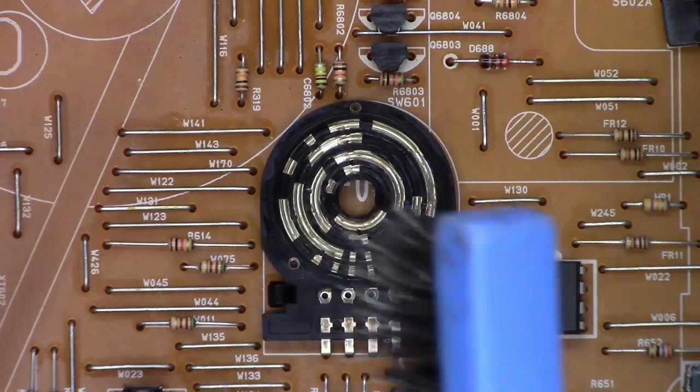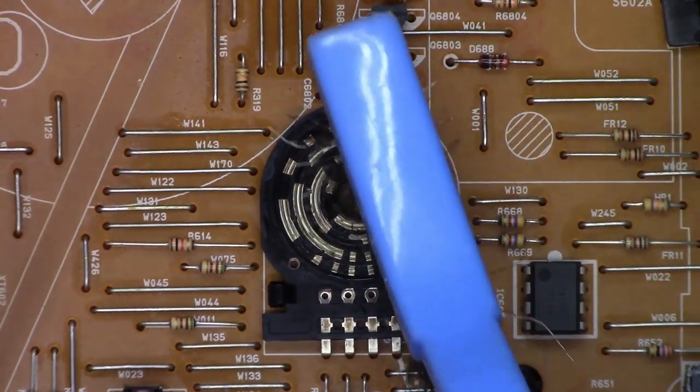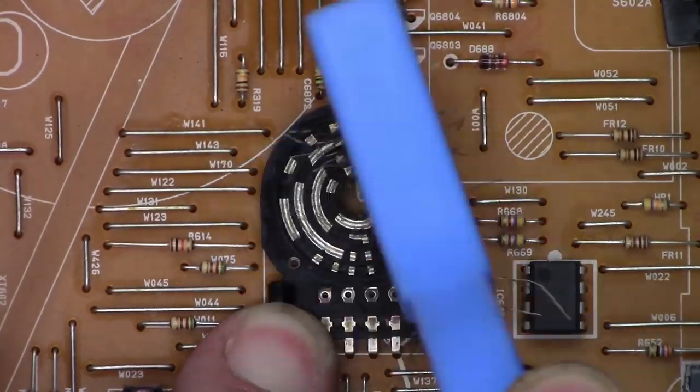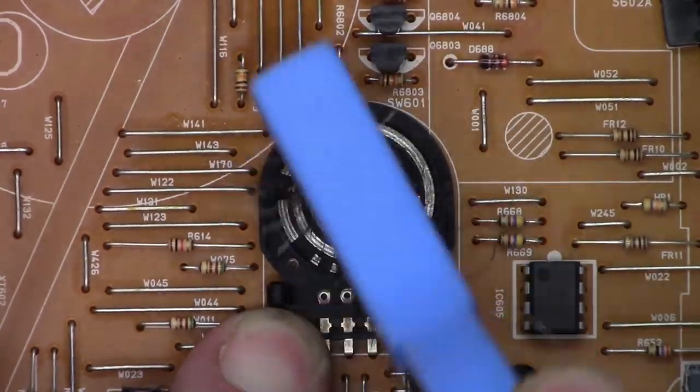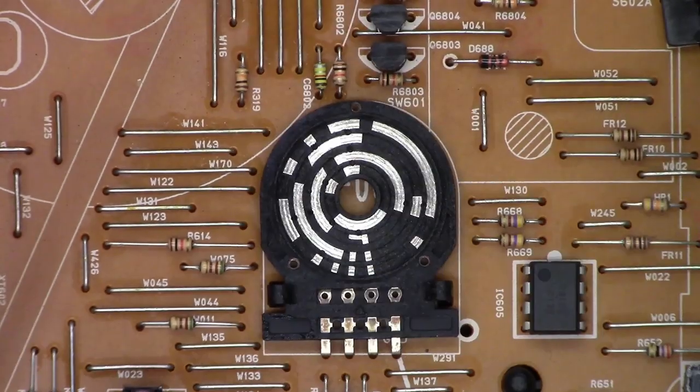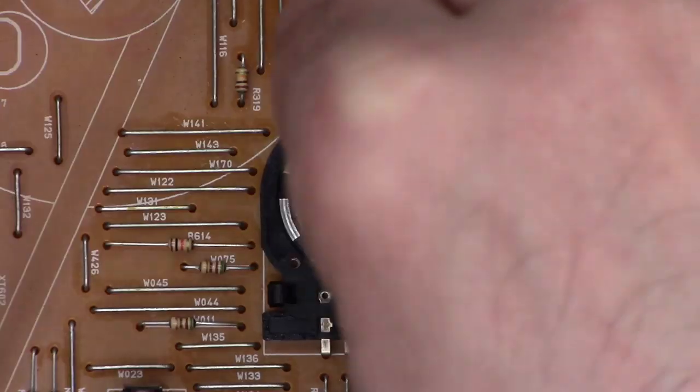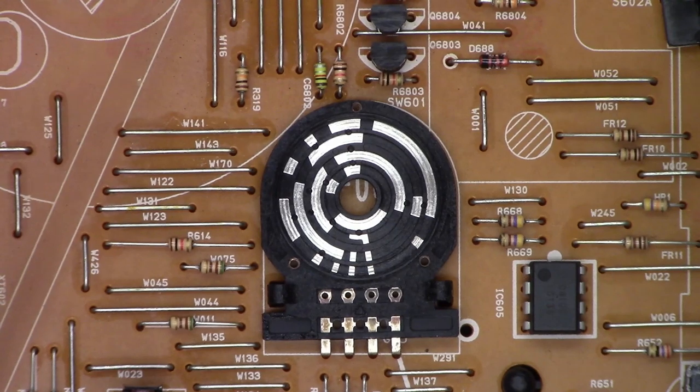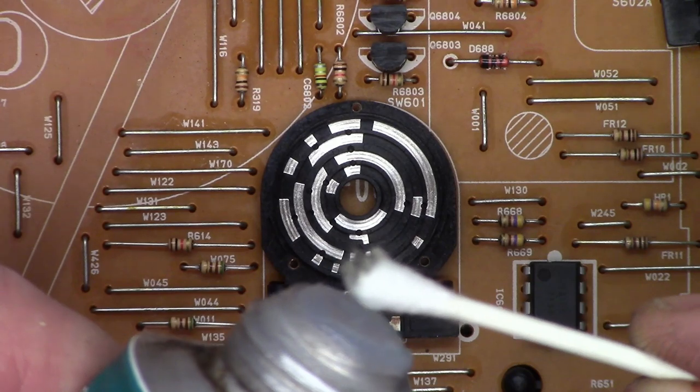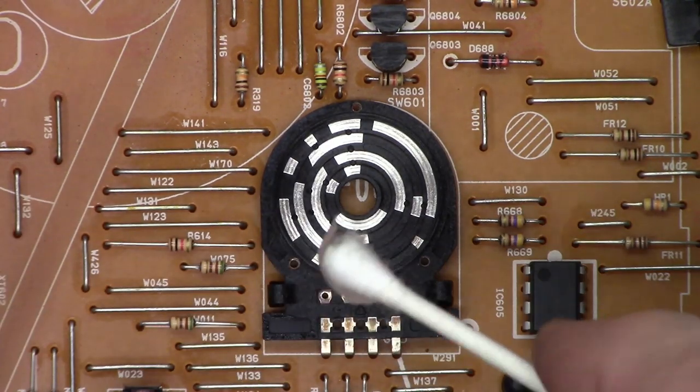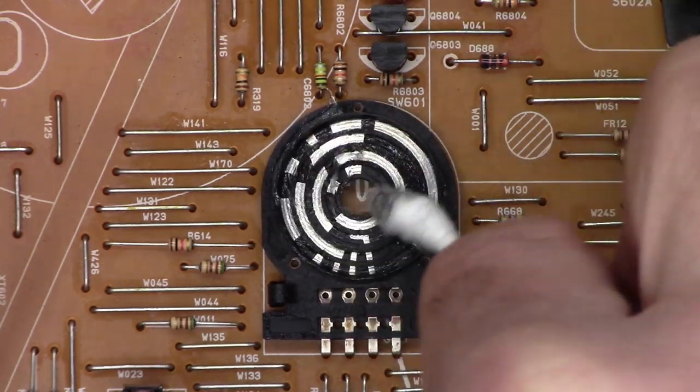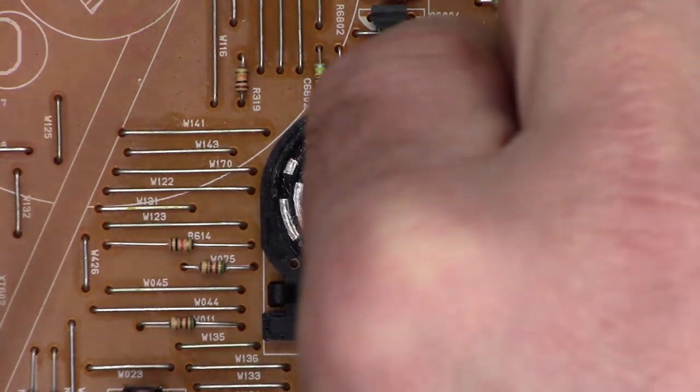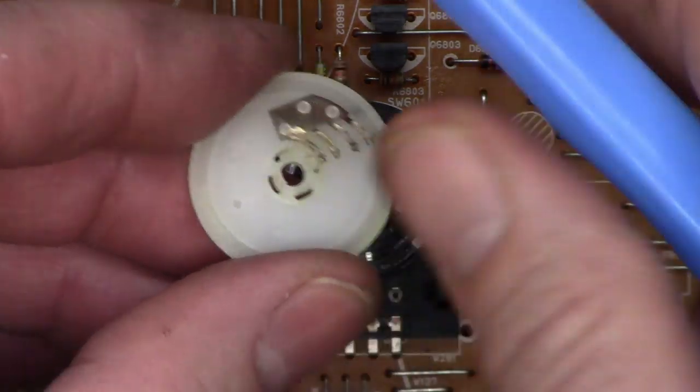So I've got a stainless toothbrush right here. And I'm just going to go around this. It's not perfect but it's much better. Next we'll just go ahead and wipe it out. Much, much better contacts than we had. Next I'm going to apply a little bit of dielectric grease.